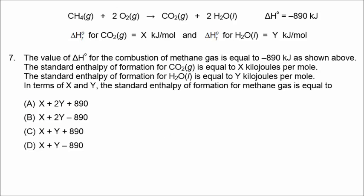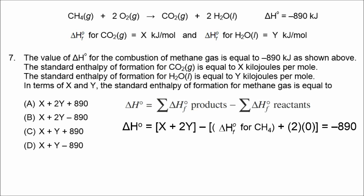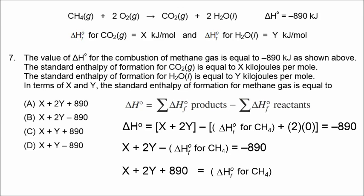Number 7 uses delta H equals the sum of enthalpy of formation of products minus reactants. We know the delta H for combustion of methane is negative 890. The products give X plus 2Y for carbon dioxide and water. The reactants include the enthalpy of formation for methane plus 2 times 0 for molecular oxygen. Solving for the enthalpy of formation for methane gives X plus 2Y plus 890, so the correct answer is A.